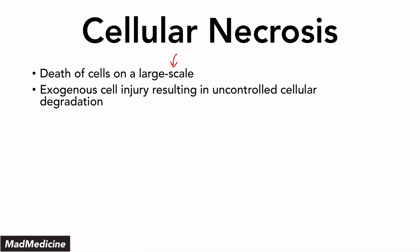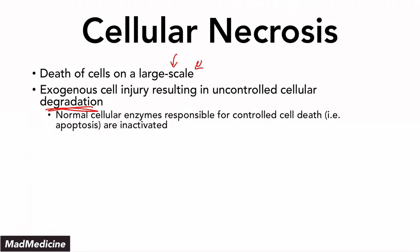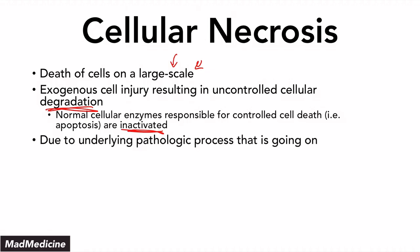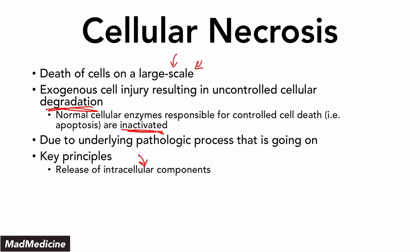When it comes to necrosis, this is cell death happening on a large scale. Some type of stress was placed upon these cells at a large scale and they were not able to adapt or go back to the normal cell phase, ending up dying off. Usually this occurs because of some exogenous stressor put on the cell, causing uncontrolled cell degradation. This means that the normal cellular enzymes that control cell death or apoptosis are inactivated — these cells were damaged and those normal processes are no longer in play.